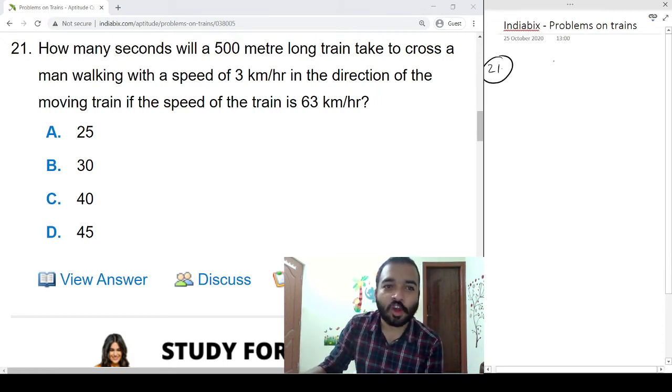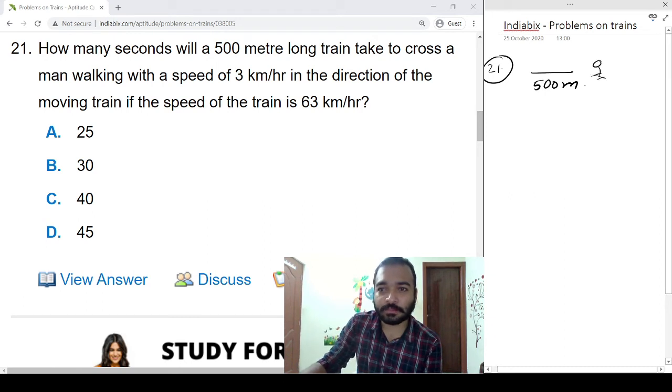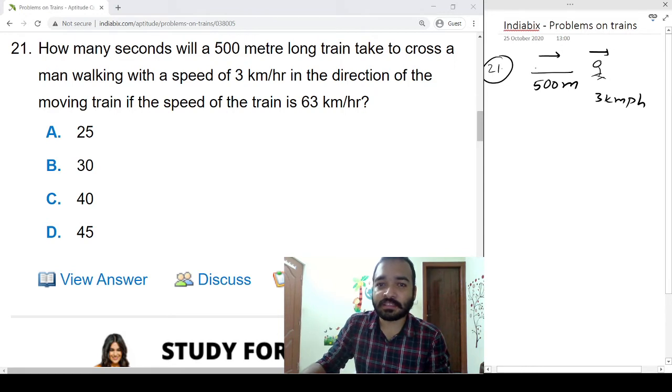Problem number 21: How many seconds will a 500 meter long train take to cross a man walking with a speed of 3 kmph in the direction of the moving train? Both the man and train are moving in the same direction. If the speed of the train is 63 kmph, we need to find out the time.